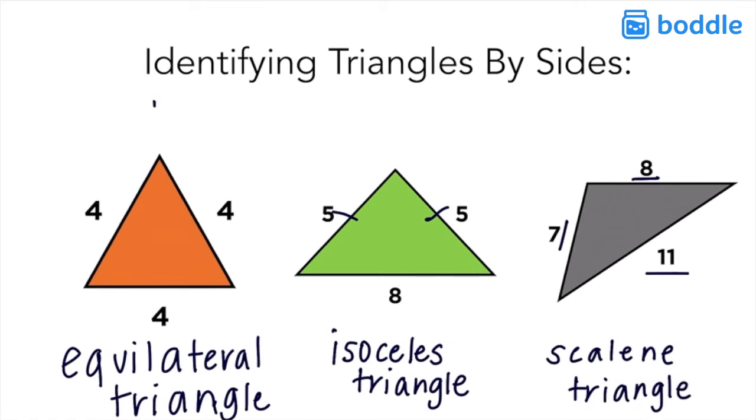So we have an equilateral triangle, an isosceles triangle, and a scalene triangle.